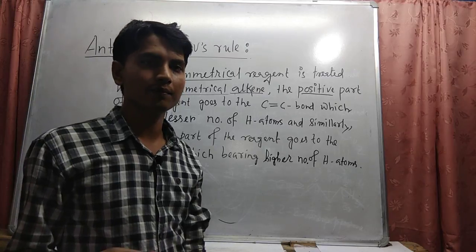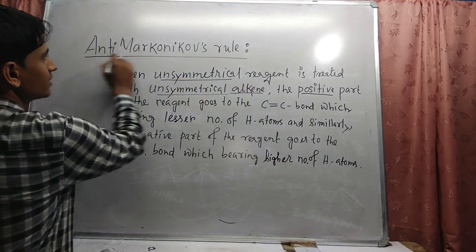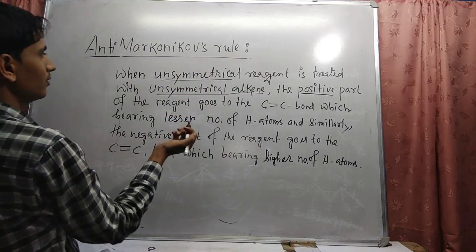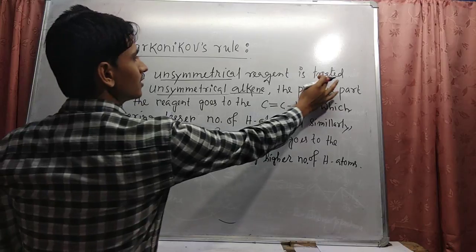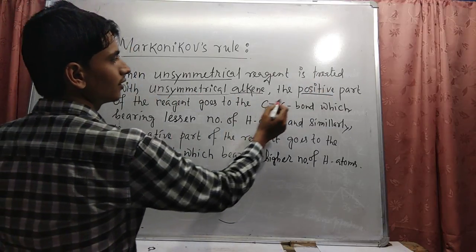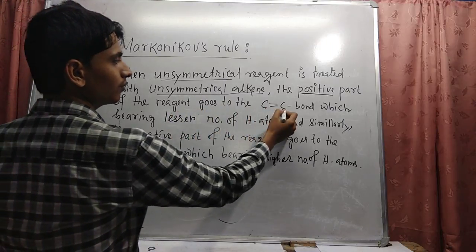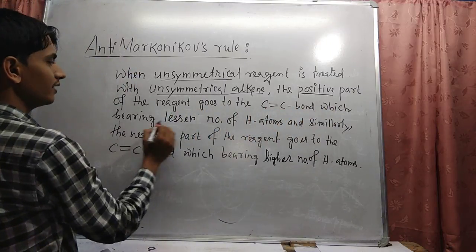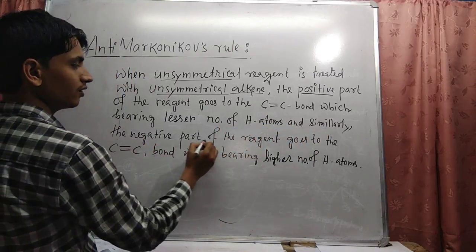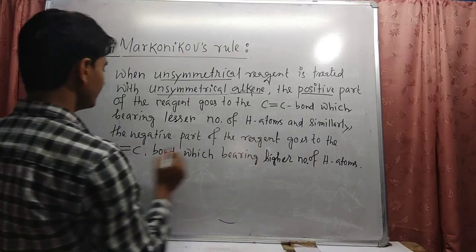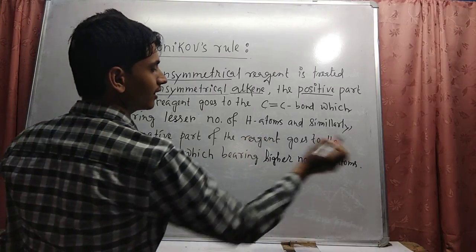Anti-Markovnikov's rule is slightly different from Markovnikov's rule. When an unsymmetrical reagent is treated with an unsymmetrical alkene, the positive part of the reagent goes to the carbon-carbon double bond bearing the lesser number of hydrogen atoms. And similarly, the negative part of the reagent goes to the carbon-carbon double bond bearing the higher number of hydrogen atoms.